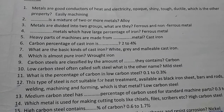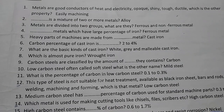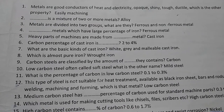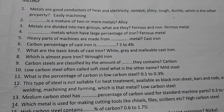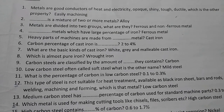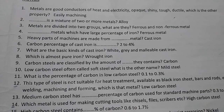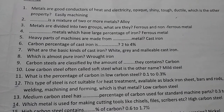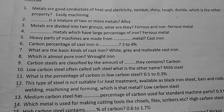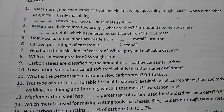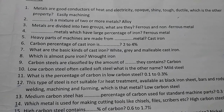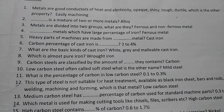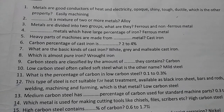Wrought iron is almost pure iron. Carbon steels are classified by the amount of carbon they contain. Low carbon steel, often called mild steel, has a carbon percentage of 0.1 to 0.3 percent.